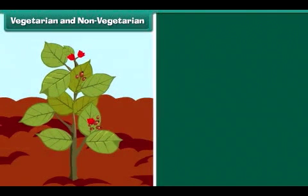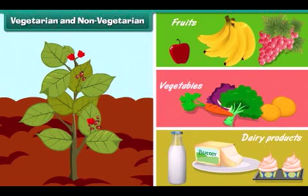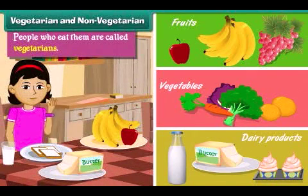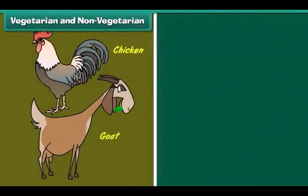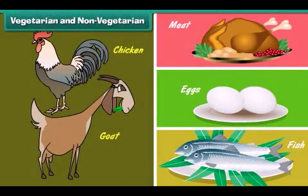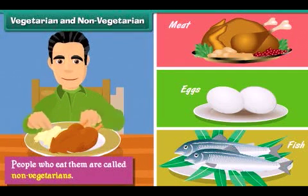Plant products like fruits, vegetables, and dairy products are vegetarian food. People who eat them are called vegetarians. Animal products like meat, eggs, and fish are non-vegetarian food. People who eat them are called non-vegetarians.